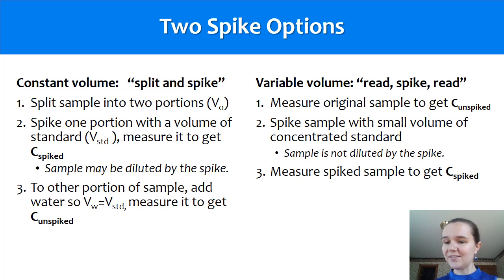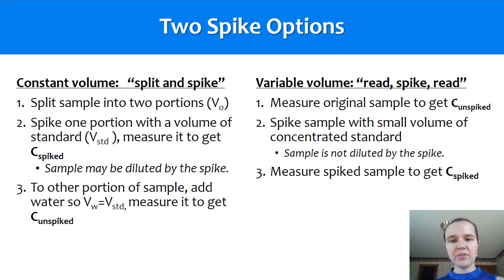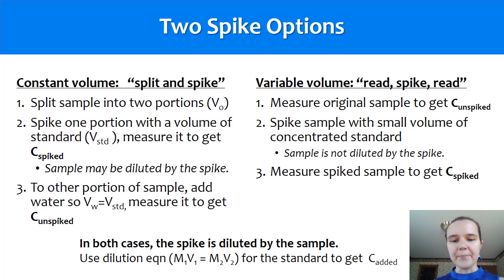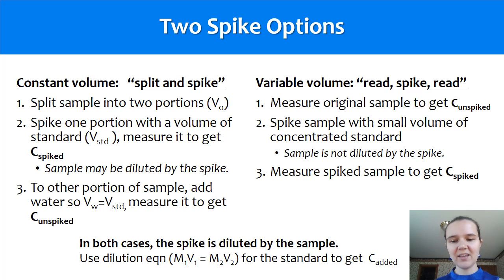It's really important that in variable volume you don't want to dilute your sample very much by the spike — it will increase the volume a little bit, but that should be minimal. The contrast between these two: with constant volume, both halves — the spiked and the unspiked — add up to the same total constant volume. In variable volume, you're increasing the volume just that tiny bit by adding the standard to the original sample and measuring again. In both cases the spike is diluted by the sample, so you have to use the dilution equation to get C added.